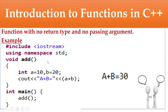Next, function with no return type and no passing arguments. The return type is void — empty — and the argument list is also empty. Inside the function, I declare two variables: int a = 10 and b = 20, and print using cout: a + b equals the result. To call this function from main, since there are no passing arguments and no return type, you directly call add(). It will print the output a + b = 30.